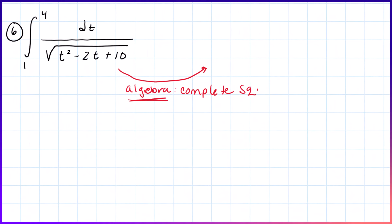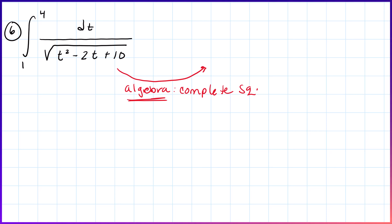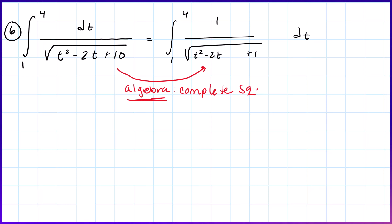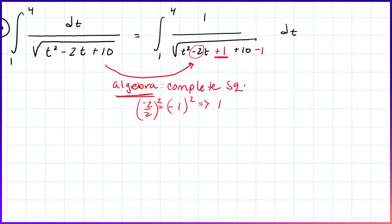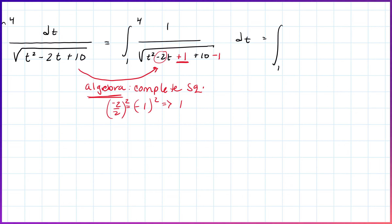Looking at t² minus 2t plus 10: take the coefficient of t, which is −2, divide by 2 to get −1, then square to get 1. We add 1 to complete the square but must also subtract 1 to keep the expression unchanged. This gives (t − 1)² + 9, so the integral from 1 to 4 becomes ∫ 1/√((t − 1)² + 9) dt, which is now of the form x² + a².